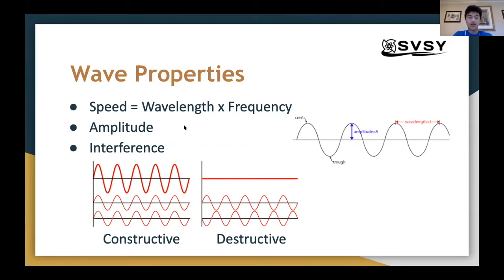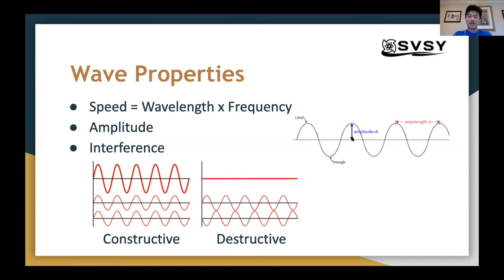We also have another property called amplitude. Amplitude is how tall or wide the wave is — it's the distance between the center line of the wave and a peak, called a crest, or the valley of the wave. An important thing to know is that amplitude is completely independent from speed, wavelength, and frequency — it has nothing to do with those properties and is not affected by changes in any of them.